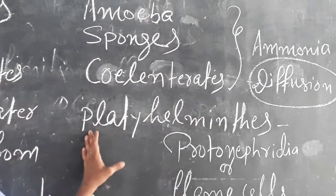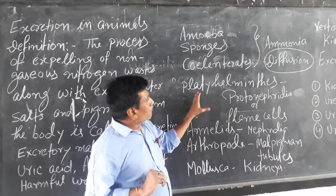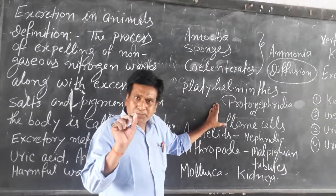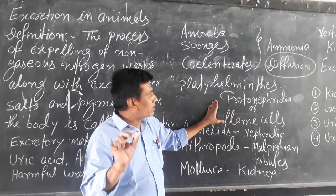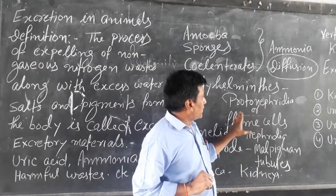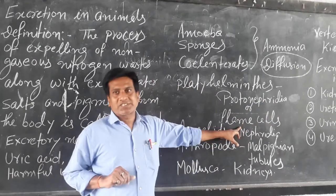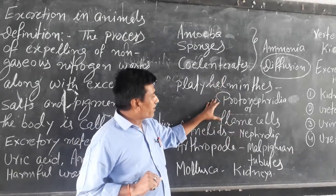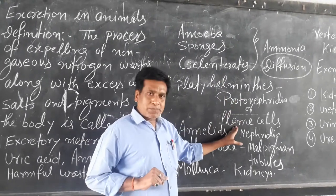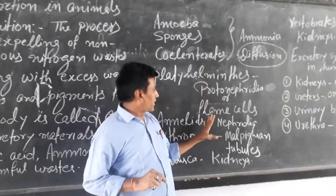Some other multicellular organisms like flatworms are multicellular organisms. They have a special organ for this purpose. This special organ is called protonephridia or flame cell. Through this special organ, they expel their waste material. They also excrete ammonia.